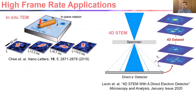Another key application is 4D STEM, where you want to record a convergent beam electron diffraction pattern at every pixel of a STEM scan to give you a data set with a wealth of information about the sample. You typically want to record this data set at frame rates of a thousand frames per second or above. For more information about the technique, I refer you to the article listed under the figure, which Direct Electron co-wrote with the Voils group from the University of Wisconsin-Madison.